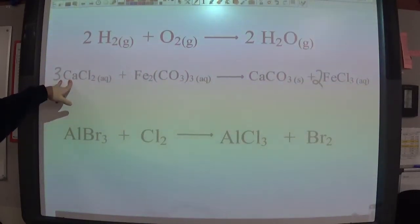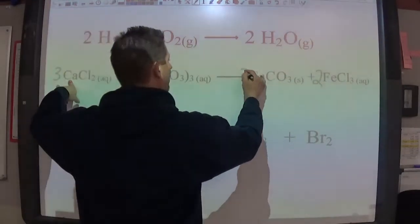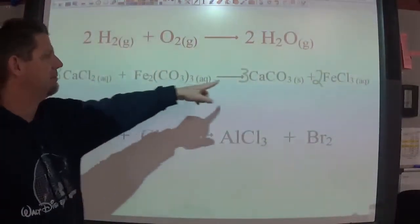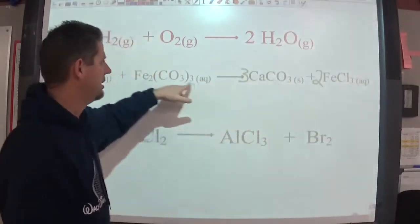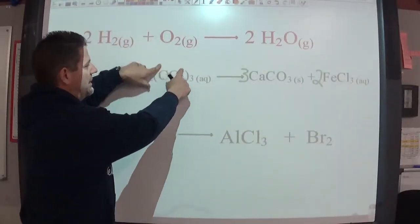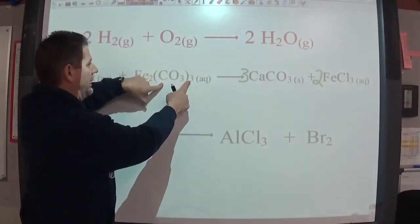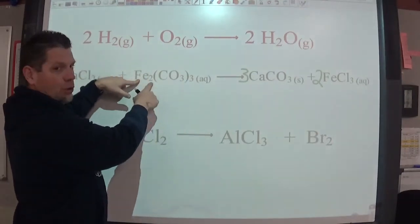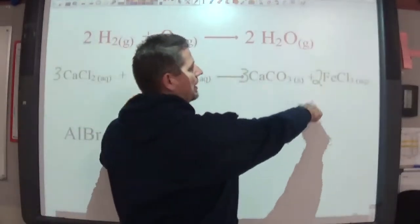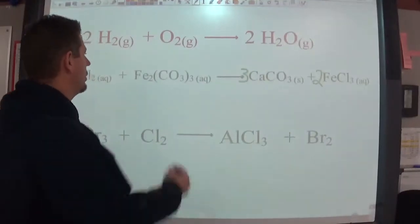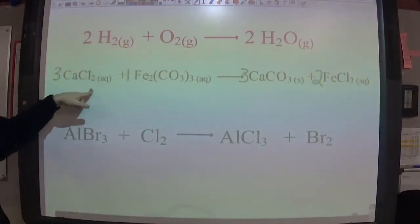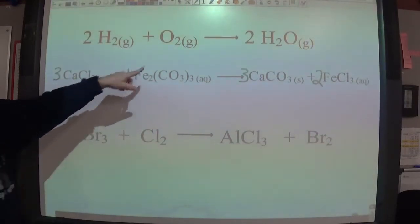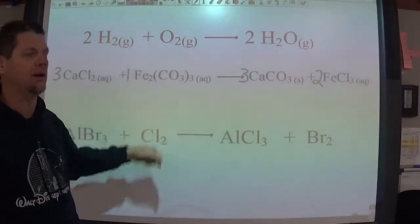But this three messed up something else. Now we need to go back and fix calcium. So I need to put a three in front of the calcium. But that messes up the carbonates. Or does it? Now I have three carbonates. And look at that. Carbonate was inside parentheses with a three. Iron has a little two next to it. And there's a two down there in front of iron chloride.